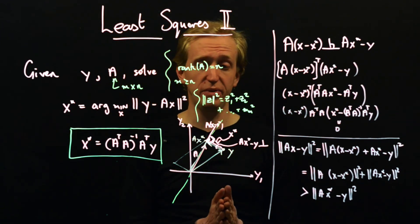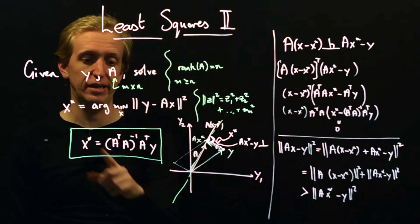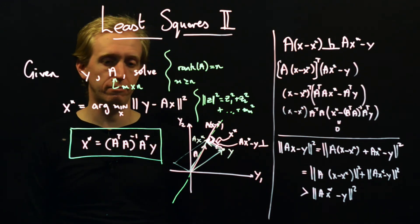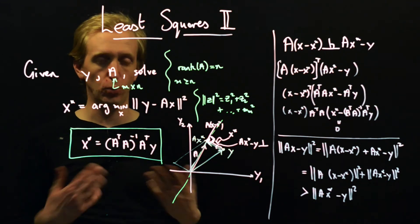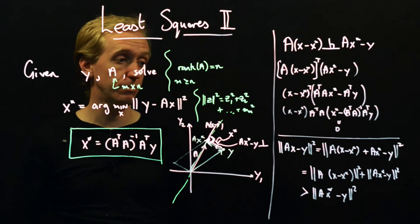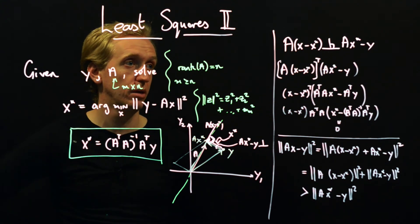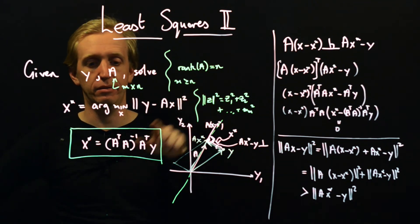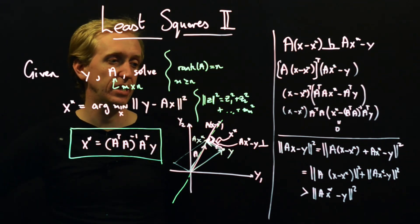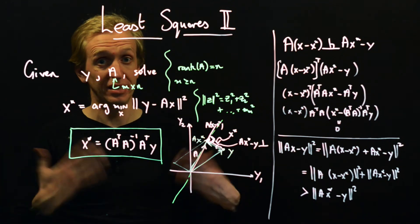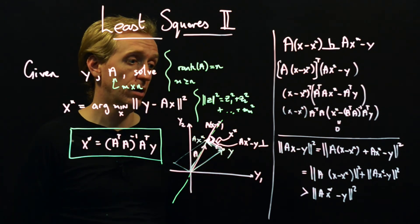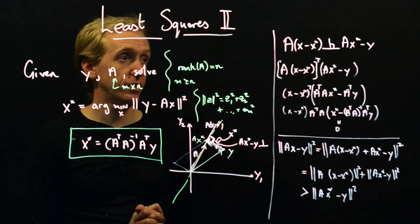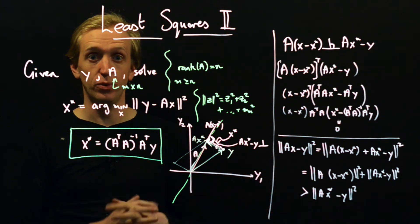So there we have our second type of least squares problem. The solution looks almost exactly the same, just things have been shuffled a little bit. This object is still called the pseudo inverse. Yeah, in fact, we're still equal to the pseudo inverse in this case. And in the case that we don't have rank n, we can put the pseudo inverse in here and we'll get the solution in the even more general case. And yeah, now let's do an optimal control example using this least squares problem.